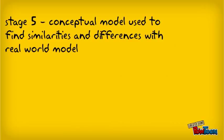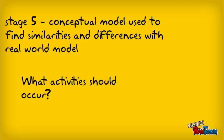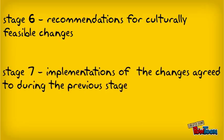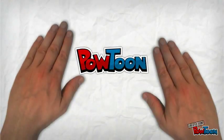During Stage 5, the ideal conceptual model is used to find similarities and differences with the perceived real-world model. This stage answers the question: what activities should occur? Stage 6 involves recommendations for culturally feasible changes. And finally, Stage 7 requires the implementation of the changes agreed to during the previous stage.